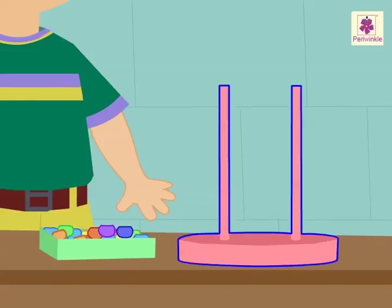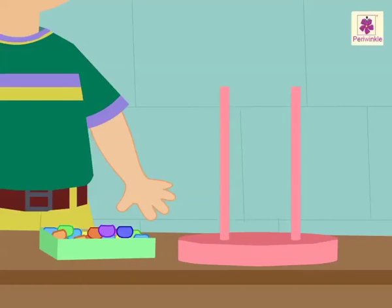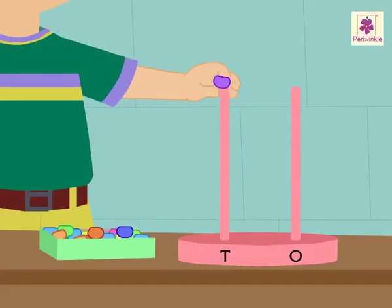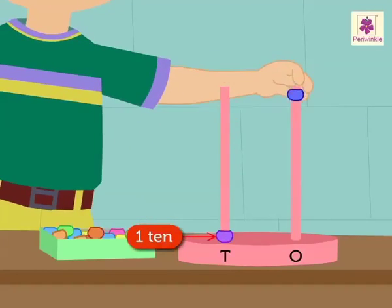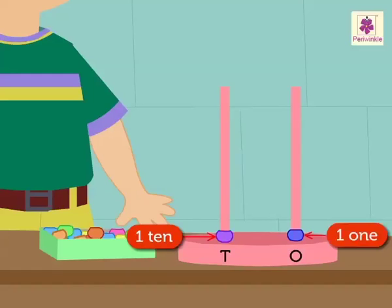Look, the abacus has two rods and many beads. One rod is for tens and the other is for ones. Each bead in the tens rod represents one ten, and each bead in the ones rod represents one one.